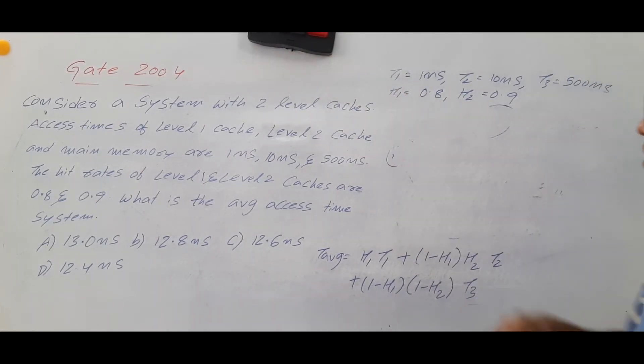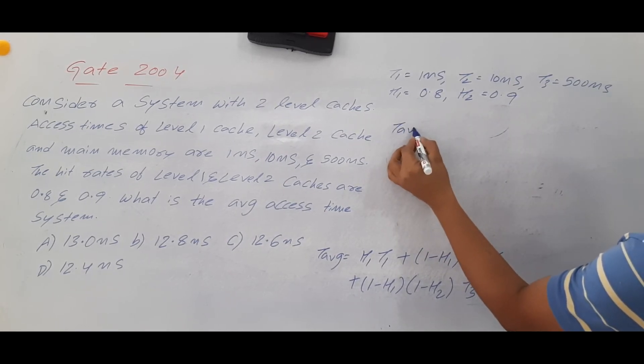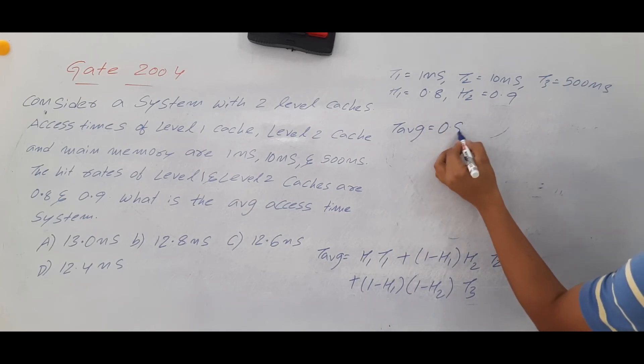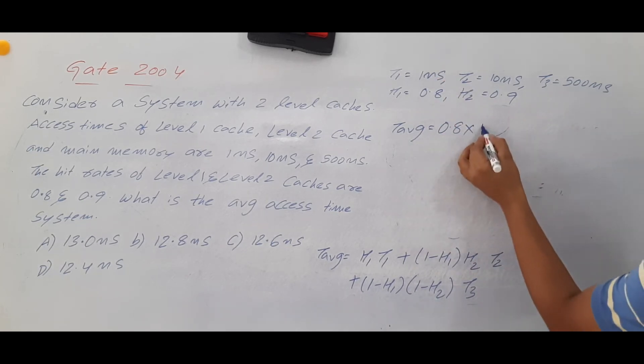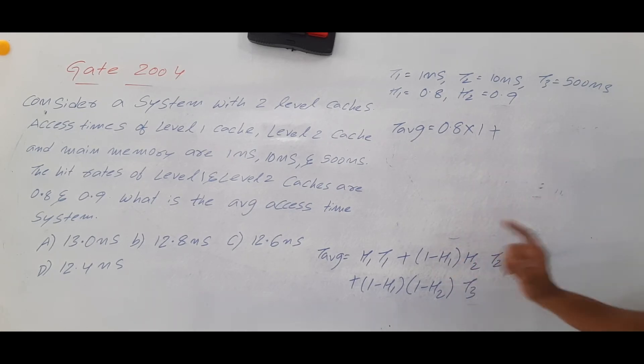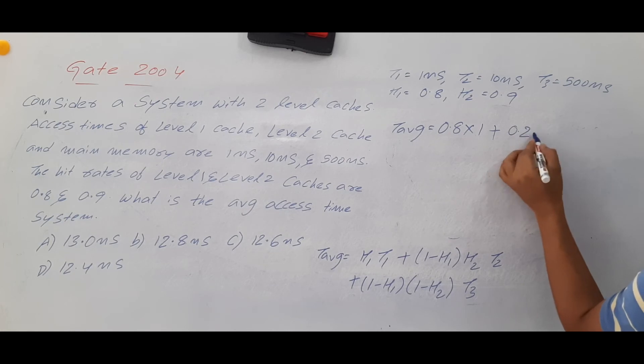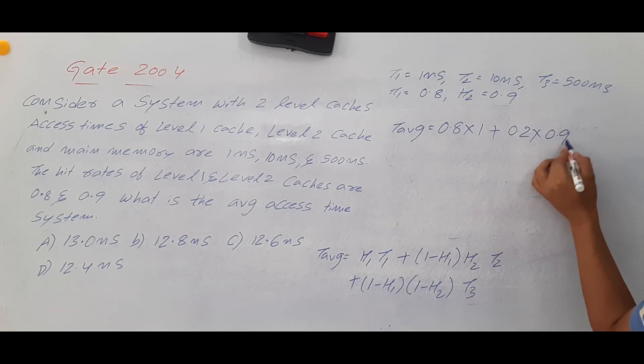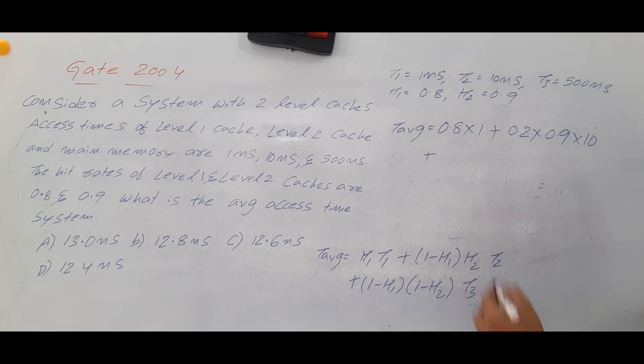What is that formula? T average is equal to H1. What is the H1 value? 0.8 into T1. T1 is 1 nanosecond. Everything is in terms of nanoseconds so let me write directly 1. Plus 1 minus H1. 1 minus 0.8 is 0.2. Into H2. H2 is 0.9 into T2. T2 is 10. Plus 0.2 into 1 minus H2. 1 minus 0.9 is 0.1 and T3. T3 is 500 nanoseconds. So let me write it as 500. So 0.8 into 1 is 0.8.